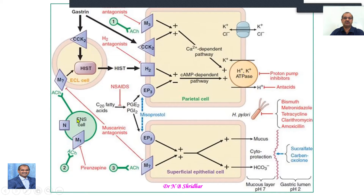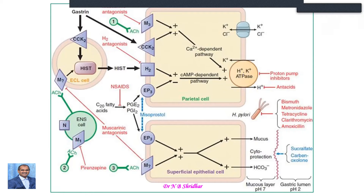H2 receptor antagonists include famotidine, ranitidine, and cimetidine. Cimetidine has been withdrawn from the market because it causes gynecomastia in males, while rabeprazole, pantoprazole, and omeprazole are the proton pump inhibitors.